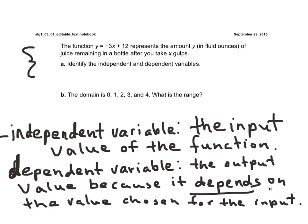Now, the dependent variable is the output value because it depends on the value chosen for the input. Now, here, they tell us what our domain is. And the domain is actually, in this case, the independent value or the independent variable.